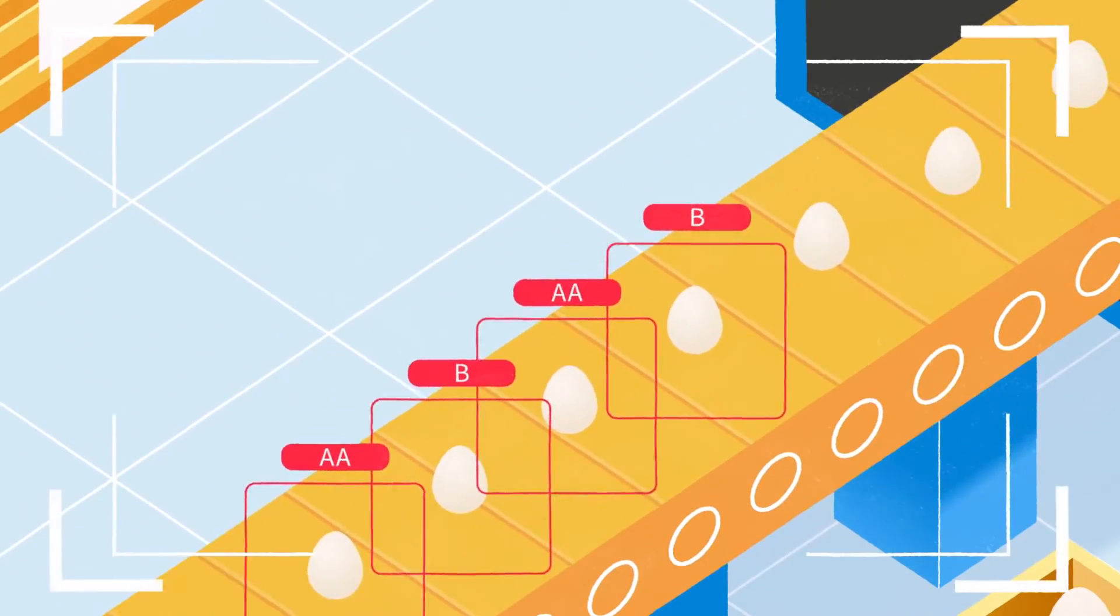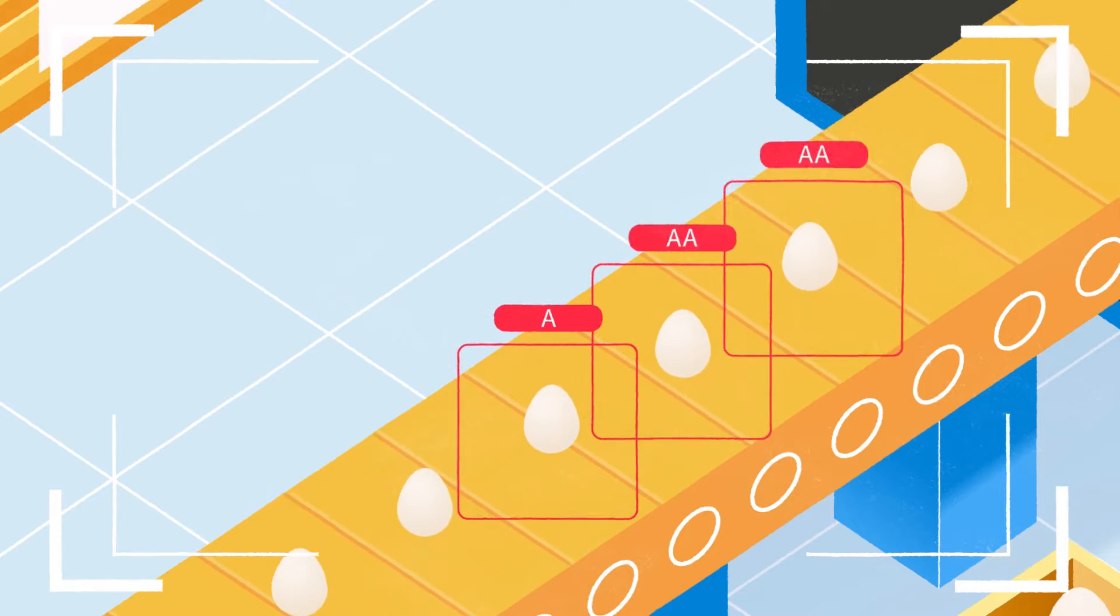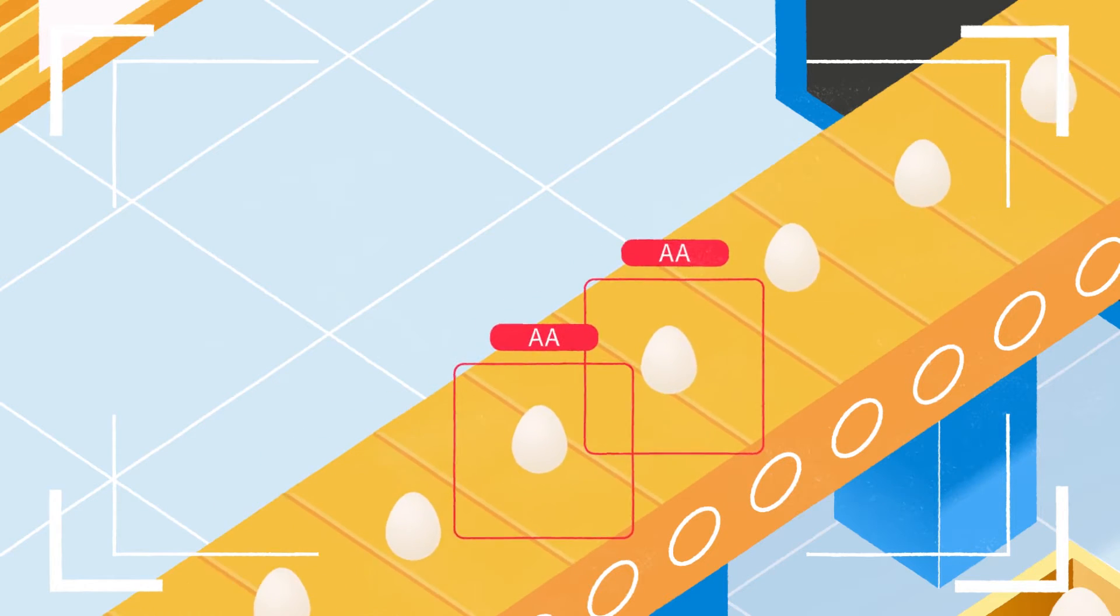AI machine vision can quickly check the quality of your eggs and sort them according to your quality standard.